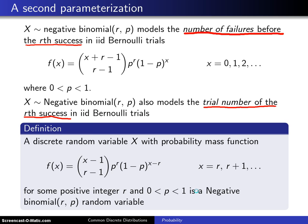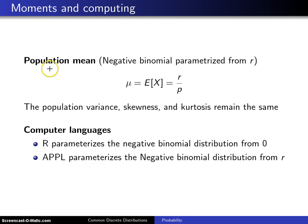Not much changes with this new parameterization. The population mean does change to r over p, but the population variance, skewness, and kurtosis all remain the same.